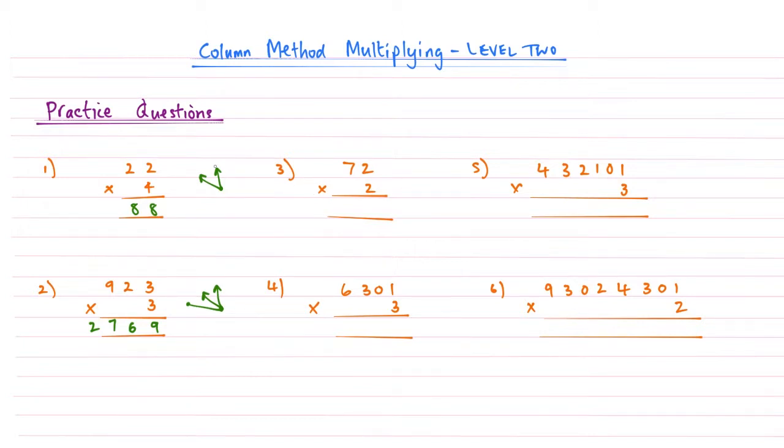Question 3, again, similar to question number 1, we're going to fan upwards. So 2 times 2 is 4, and then 2 times 7, that's 14. And because it's a 14, it's a two-digit number, we can span across, so 144 there.